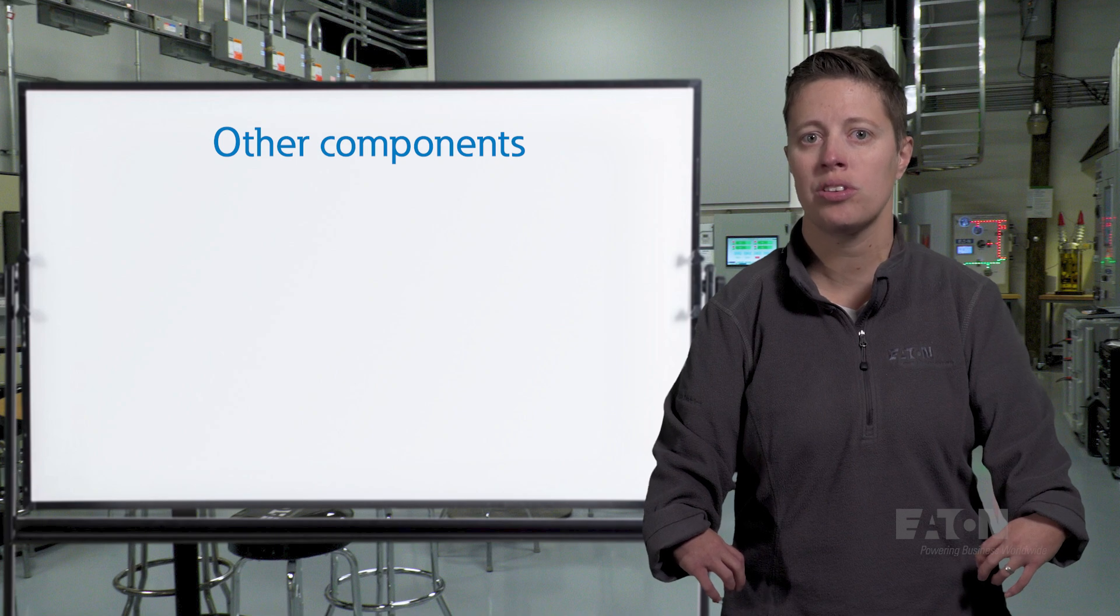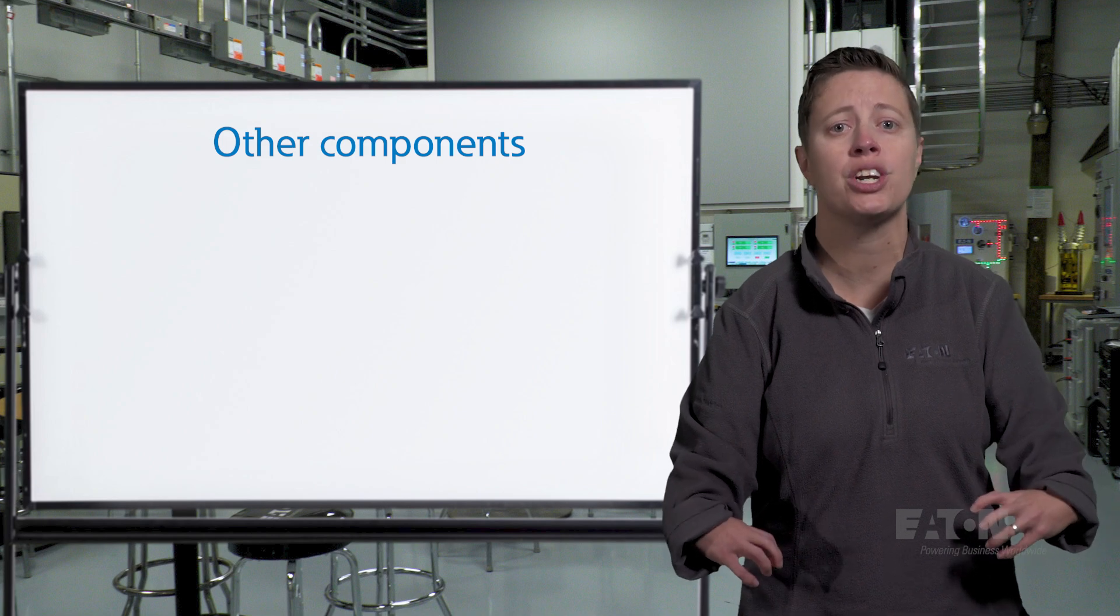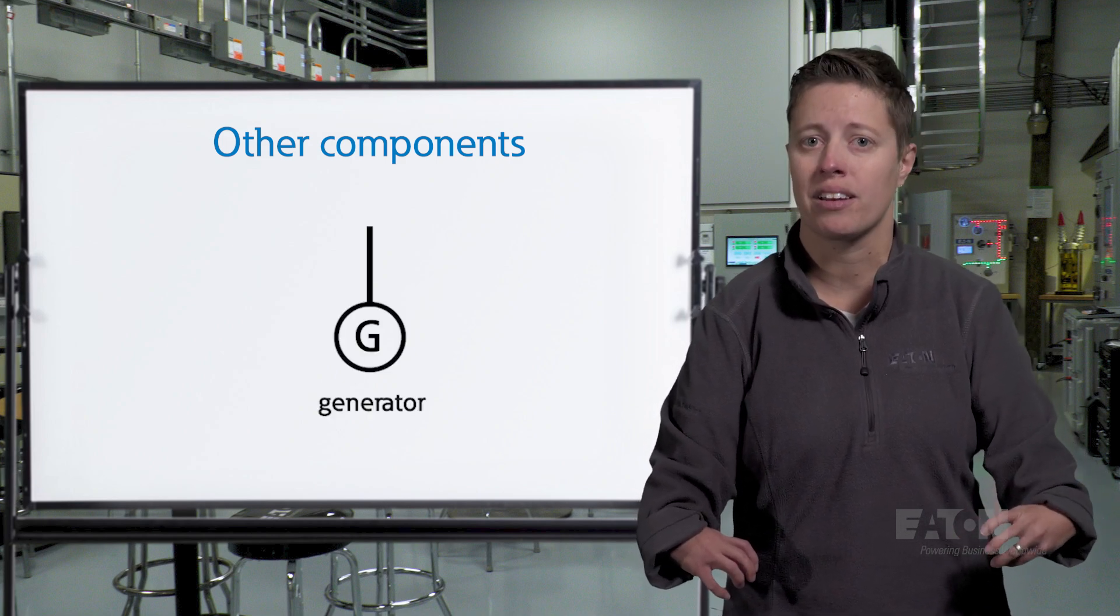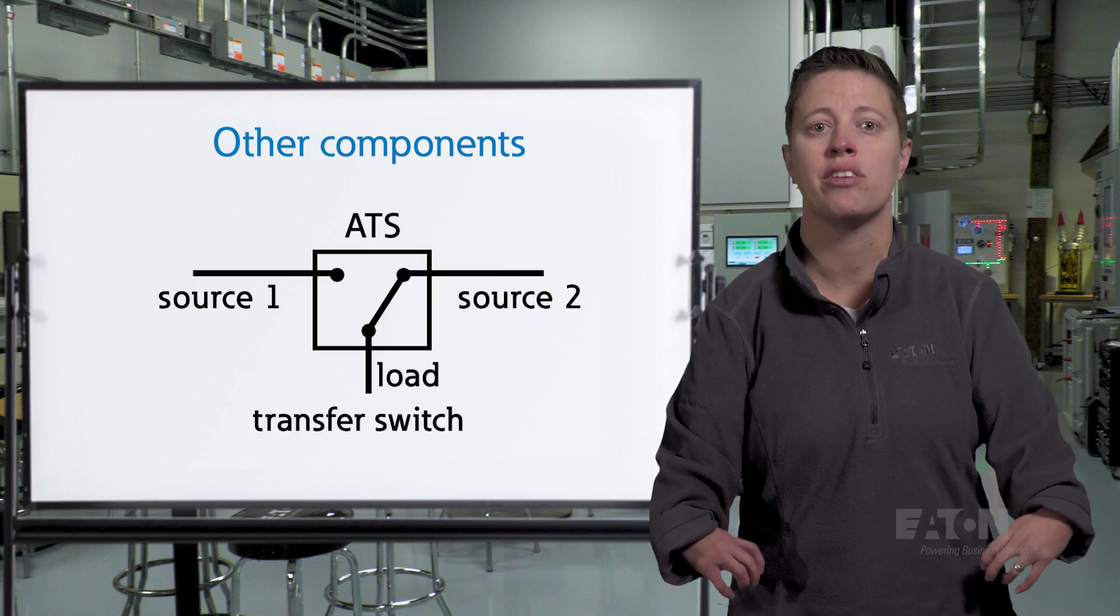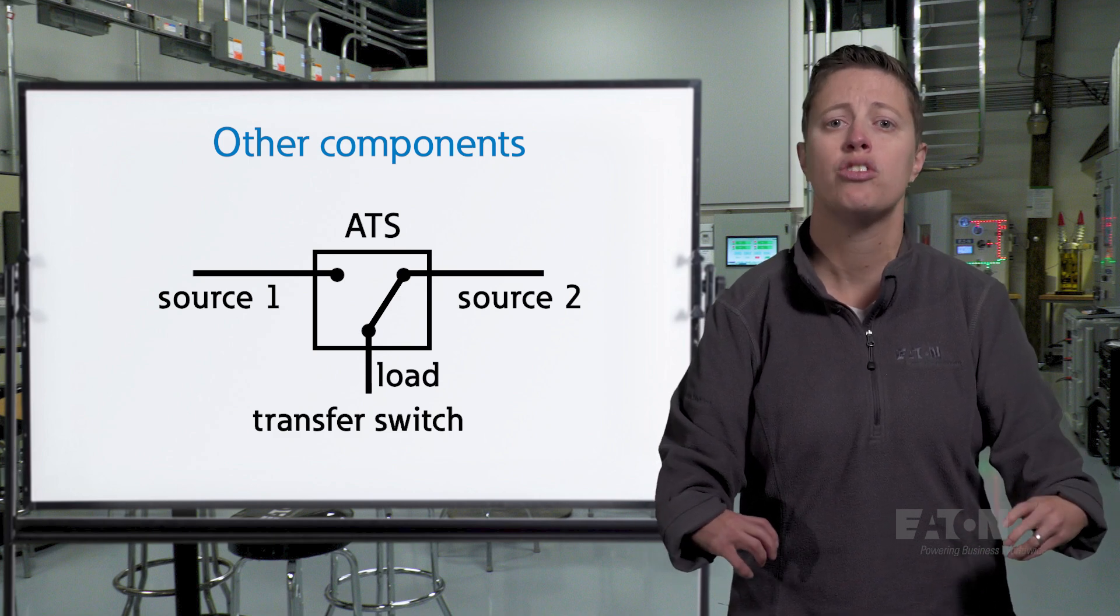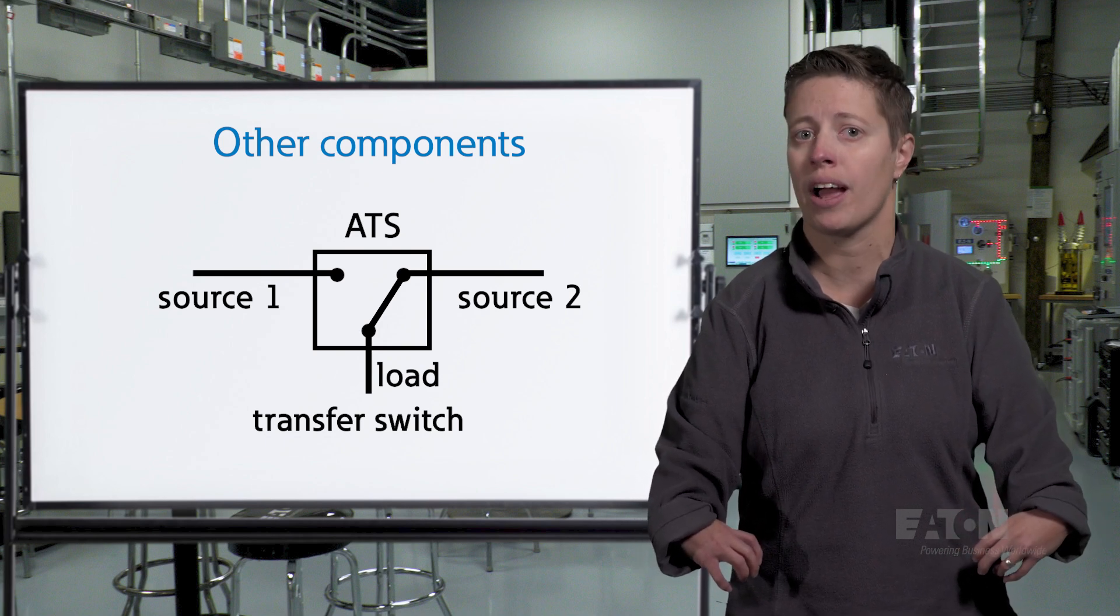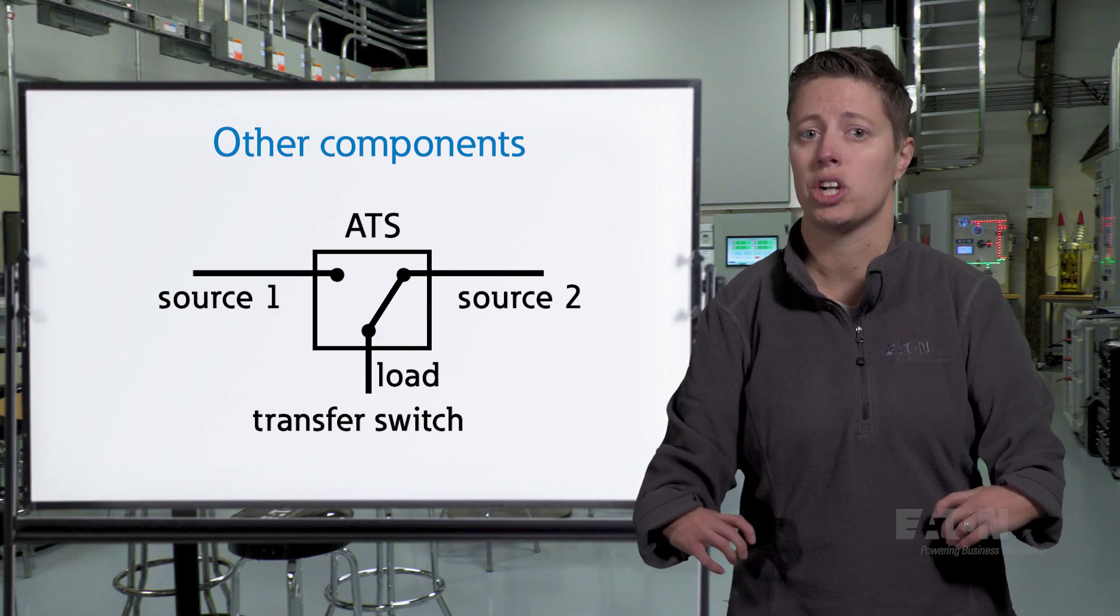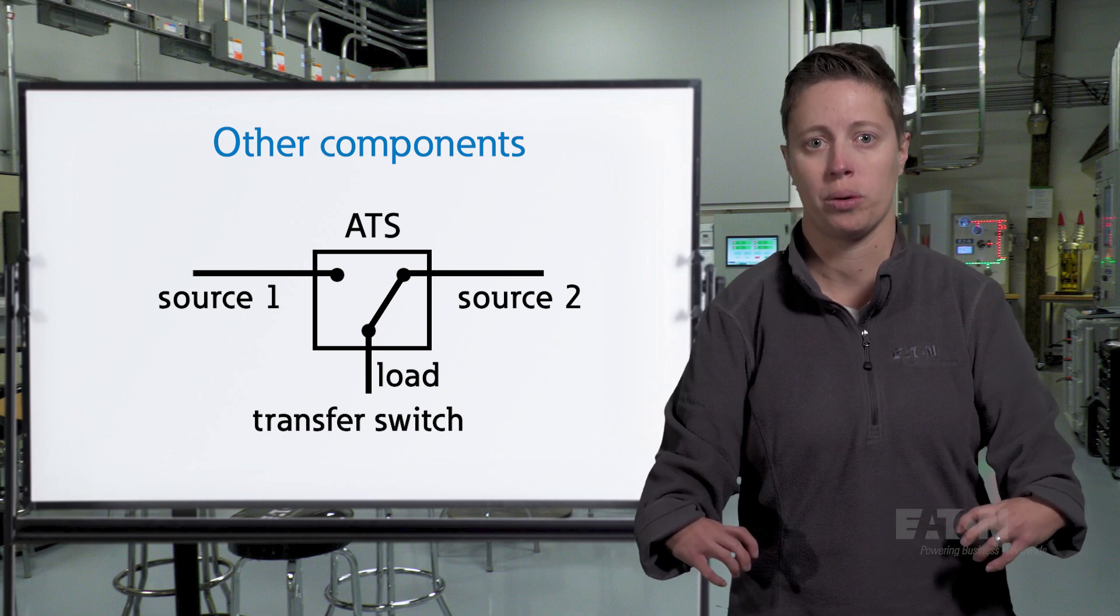In addition to utility sources, it is important single lines also show both permanent generators and provisions for temporary generator hookup. Generators are usually depicted as a circle with a G inside. The transfer switch symbol indicates a device used to switch the power supply from one source to another, often to and from a utility source and a generator source. It is typically shown as a rectangle with two inputs and one output, and lines indicating the switching action. It is likely to be labeled ATS for automatic transfer switch.